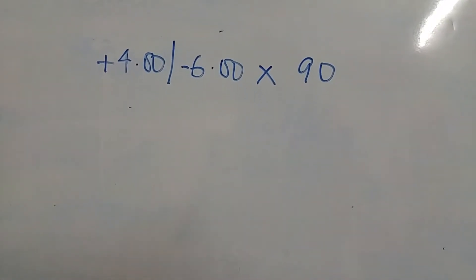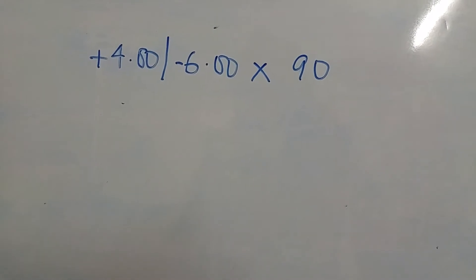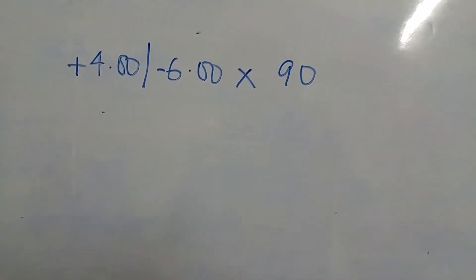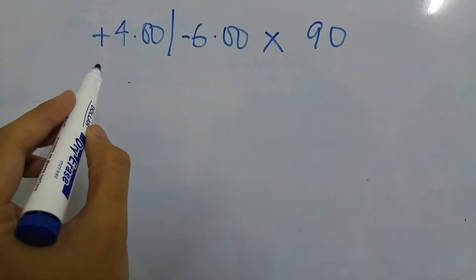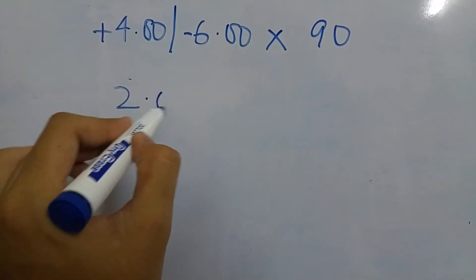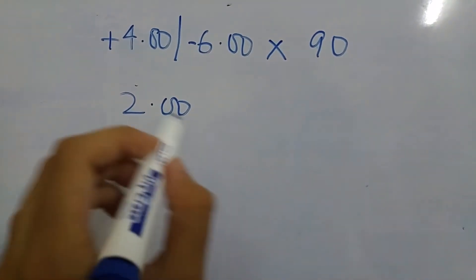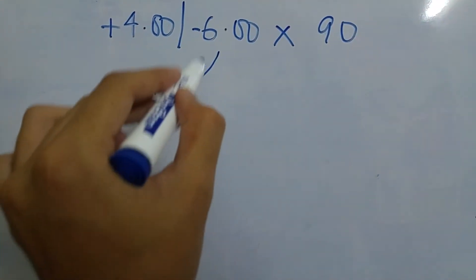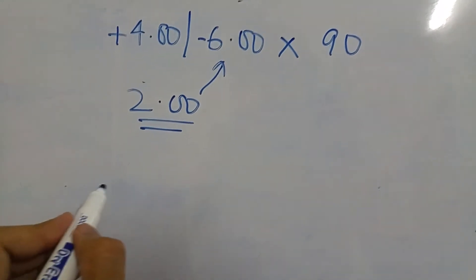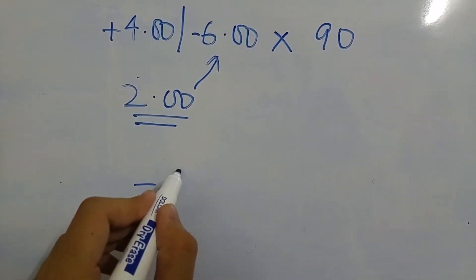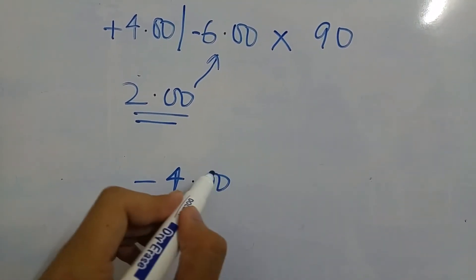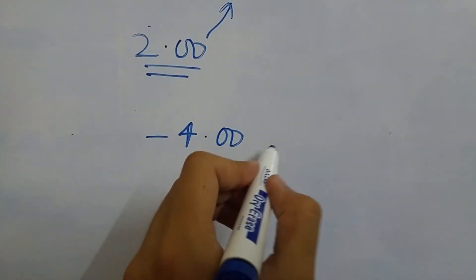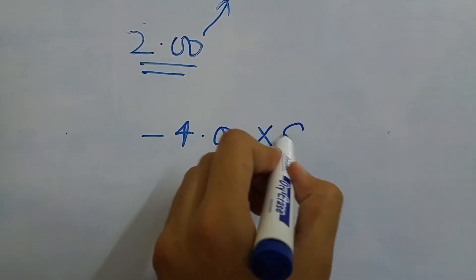The first step of cylinder reduction is to decide the amount of cylinder you want to reduce. Let's consider we want to reduce the cylinder by two diopters. So first, reduce two diopters from the prescription — we get minus 4. Minus 4 is the new cylinder, and the axis remains the same in cylinder reduction.